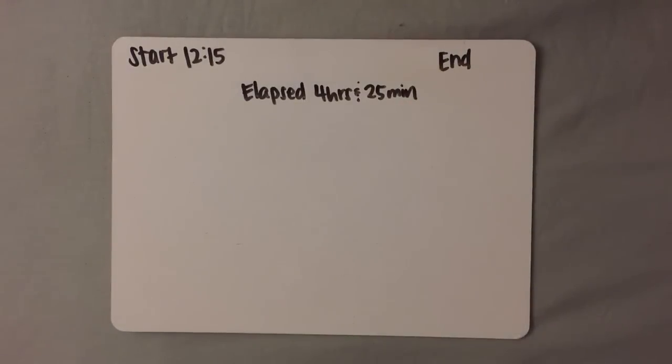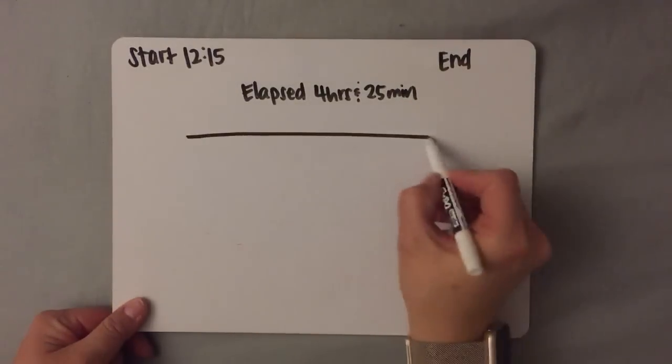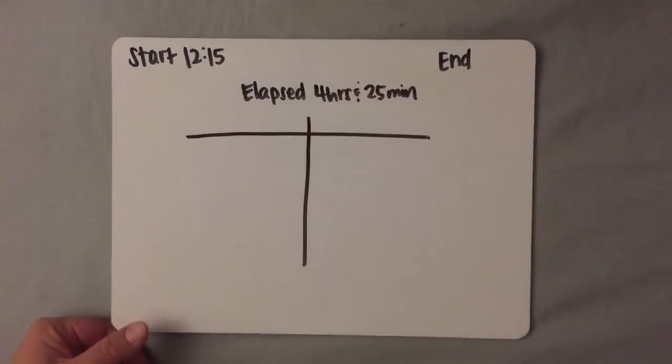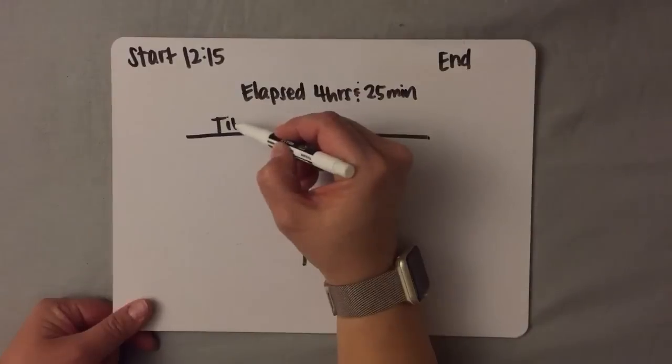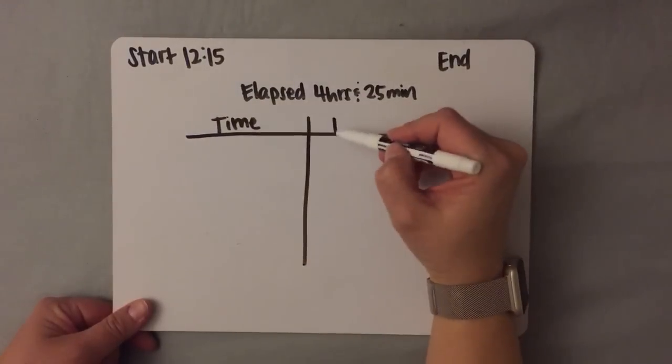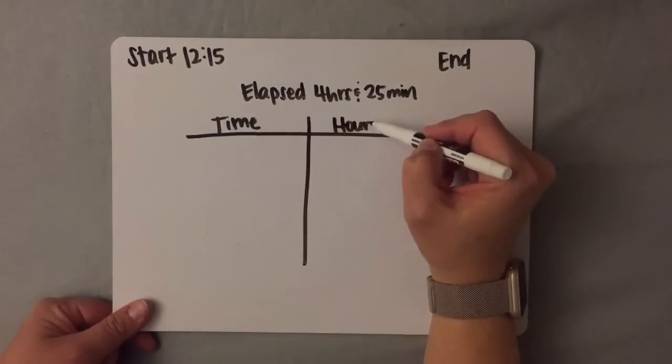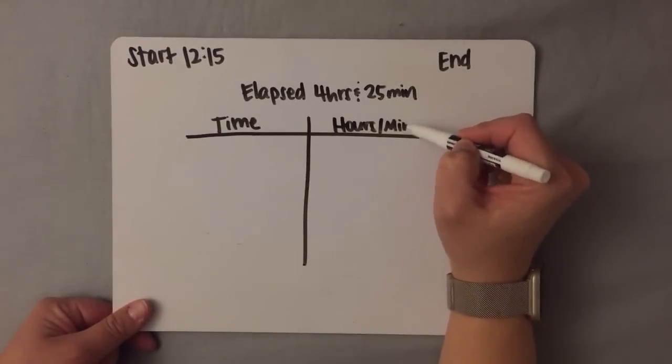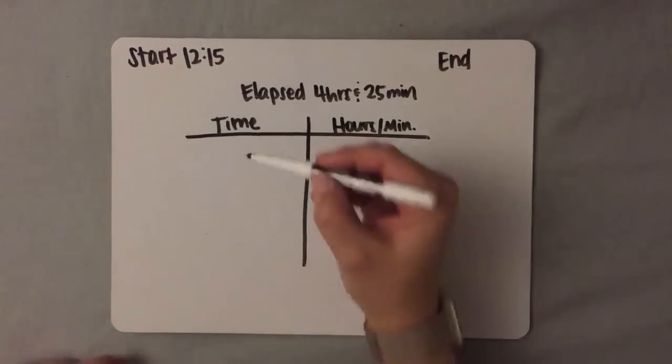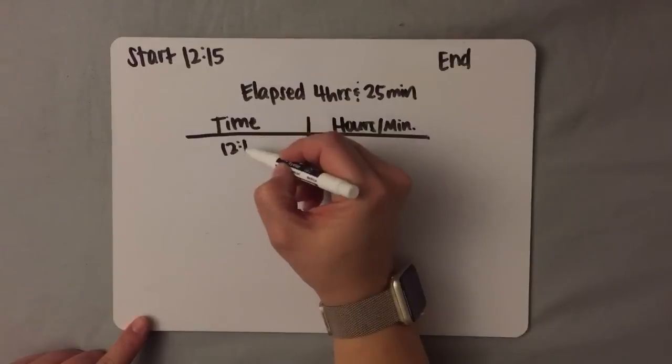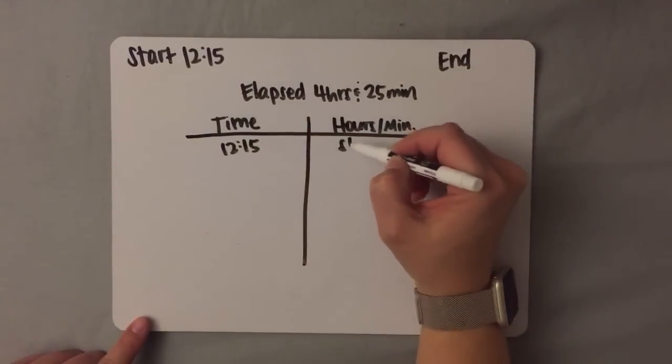On this t-chart, I'll be setting it up the same way as I do with an elapsed time t-chart, with the time on this side and the hours and minutes on this side. I also put the start time right here at the top, and I label it start.